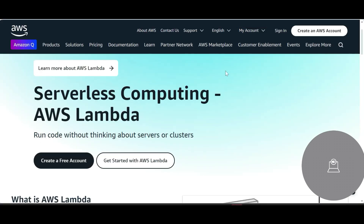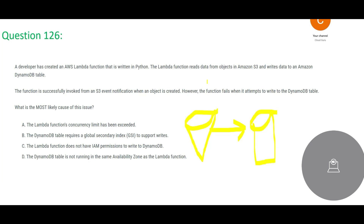Lambda is serverless compute — you can run code without thinking about servers or clusters, using different languages like Python, Ruby, or Java. This developer chose Python. The function is successfully invoked from an event notification when an object is created in S3, but the function fails when it attempts to write to DynamoDB. We need to determine why it is failing.